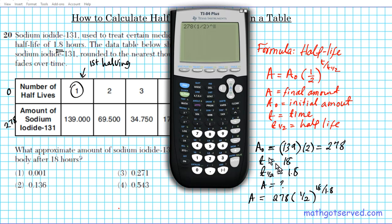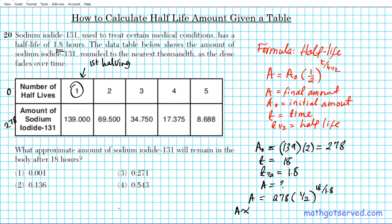We have 278 times 1 divided by 2, put that one-half in the bracket - this is the base of an exponent. What is the exponent? The exponent is a quotient, so encapsulate that in its own parenthesis: 18 divided by 1.8, so that there are no grouping errors in the calculator. Enter, enter: 0.271 rounded to the third decimal place.